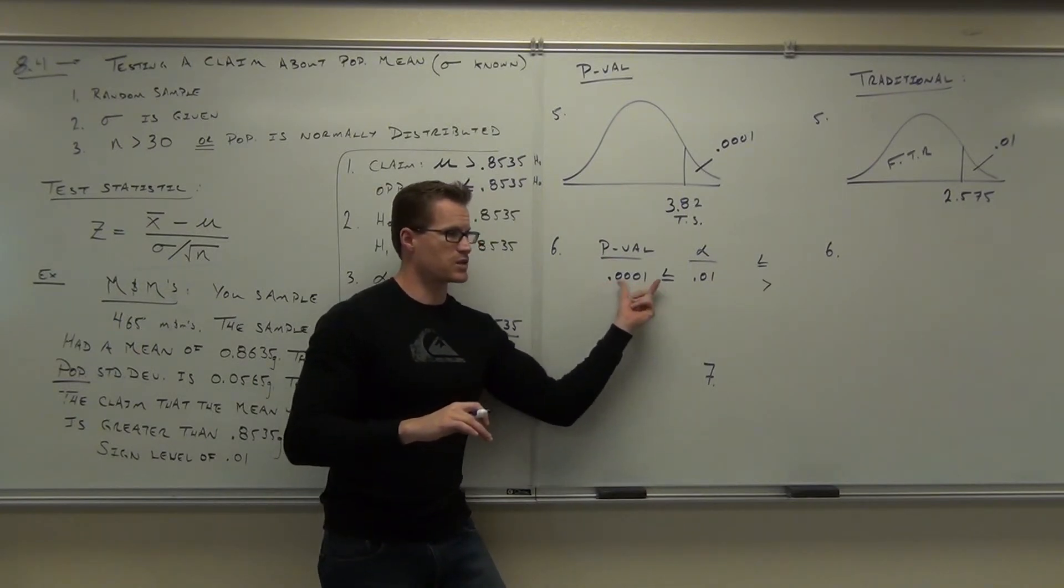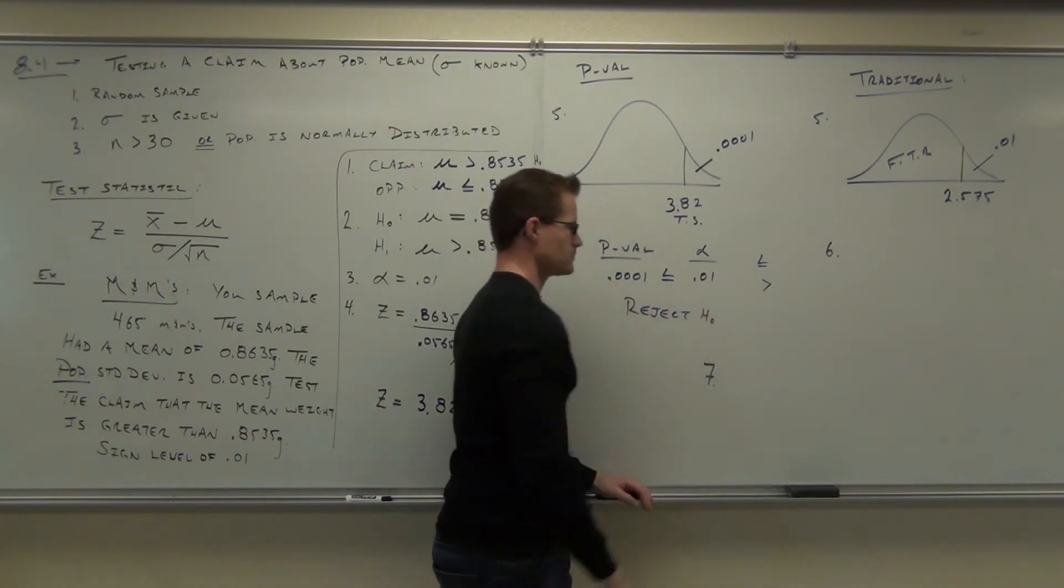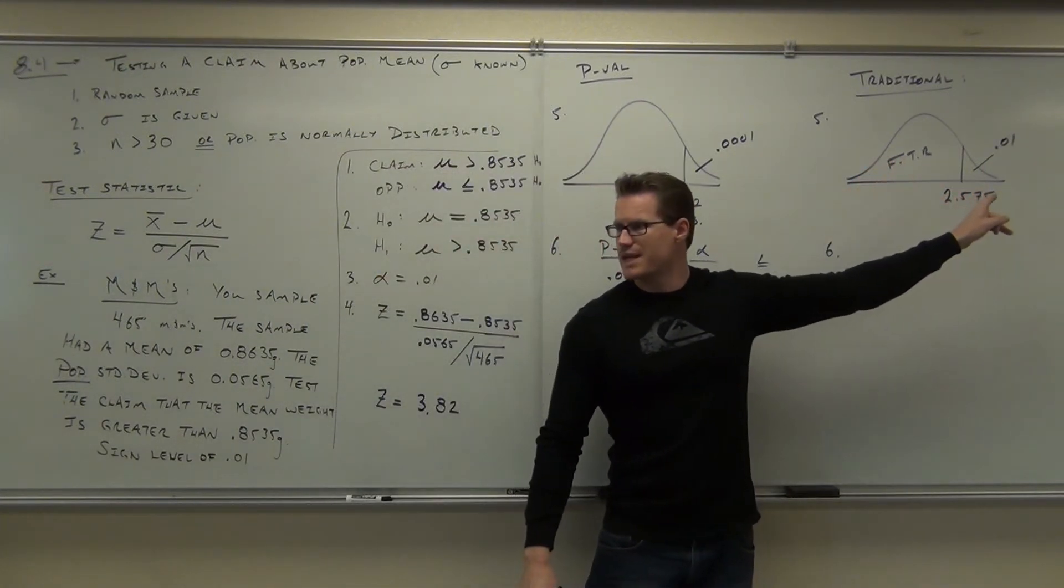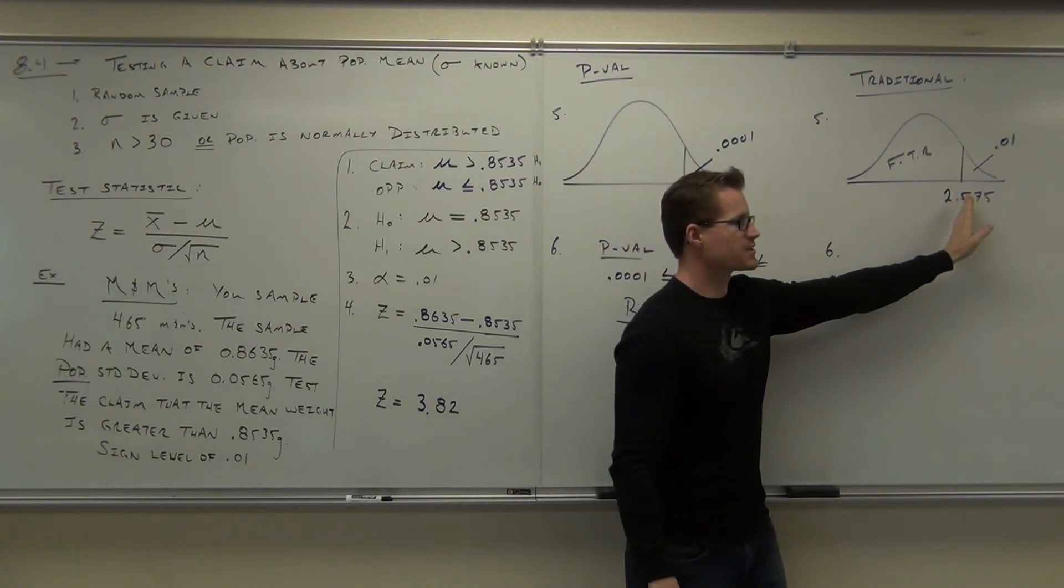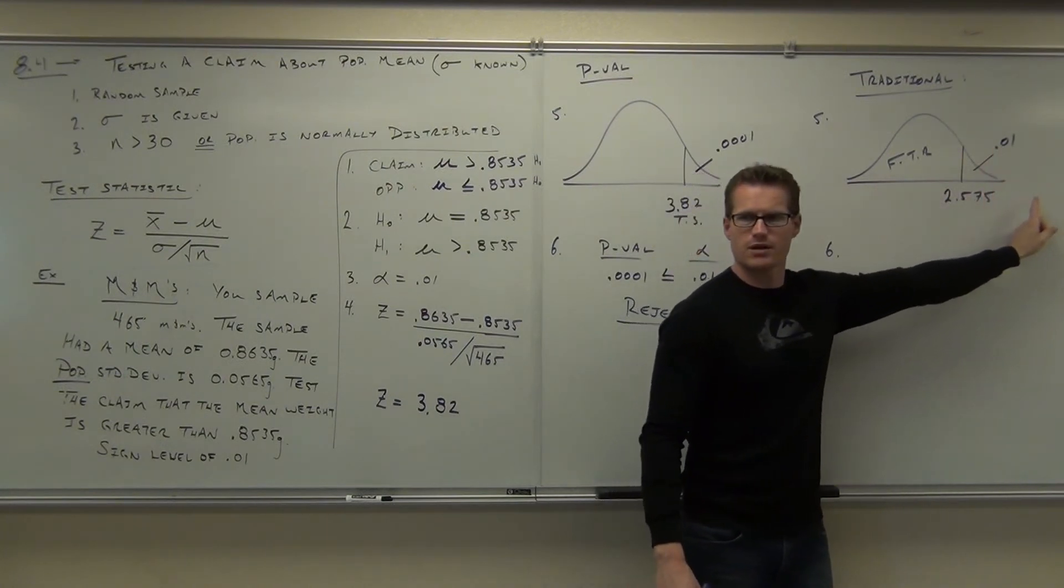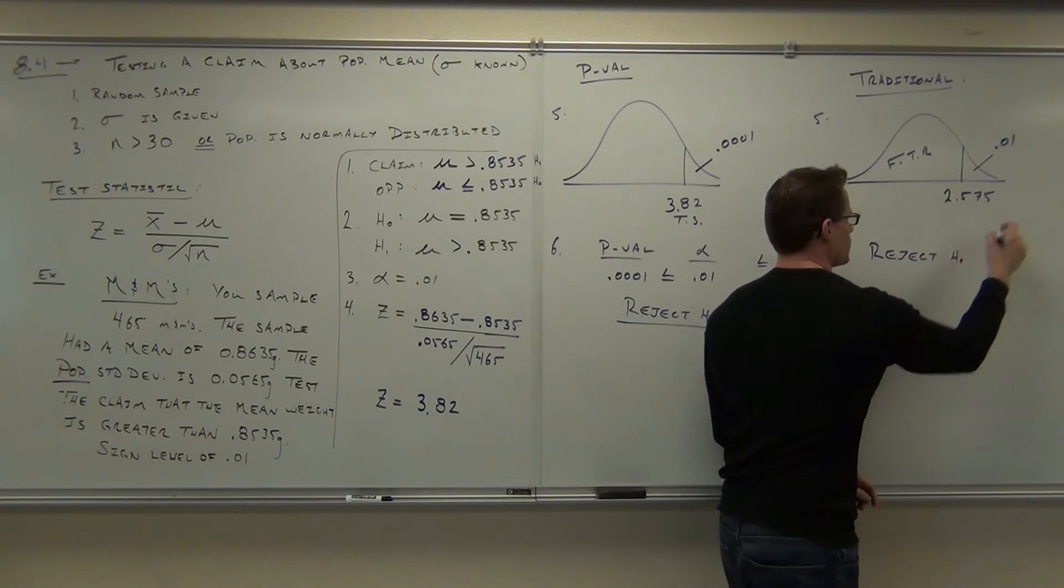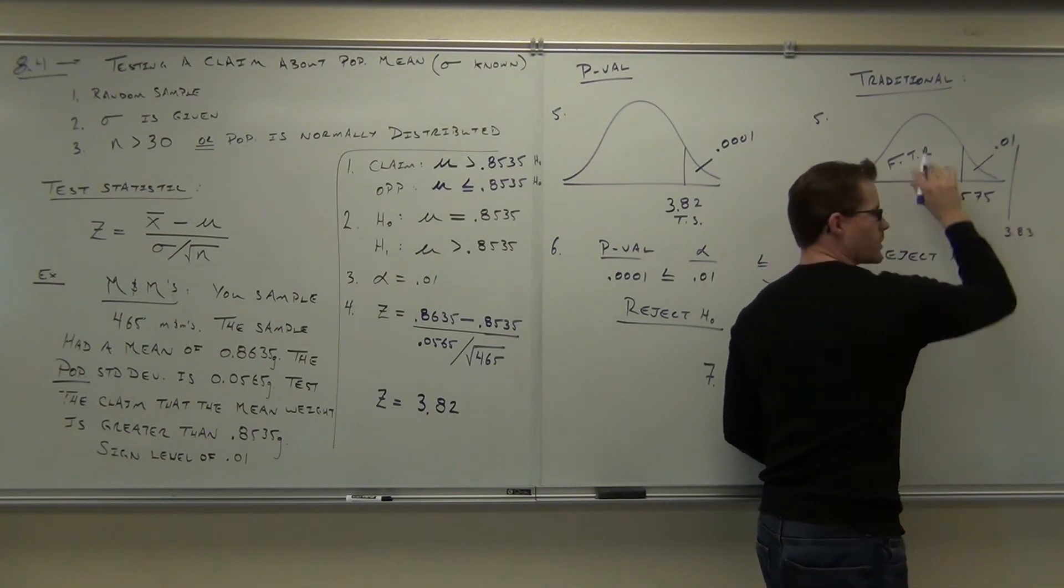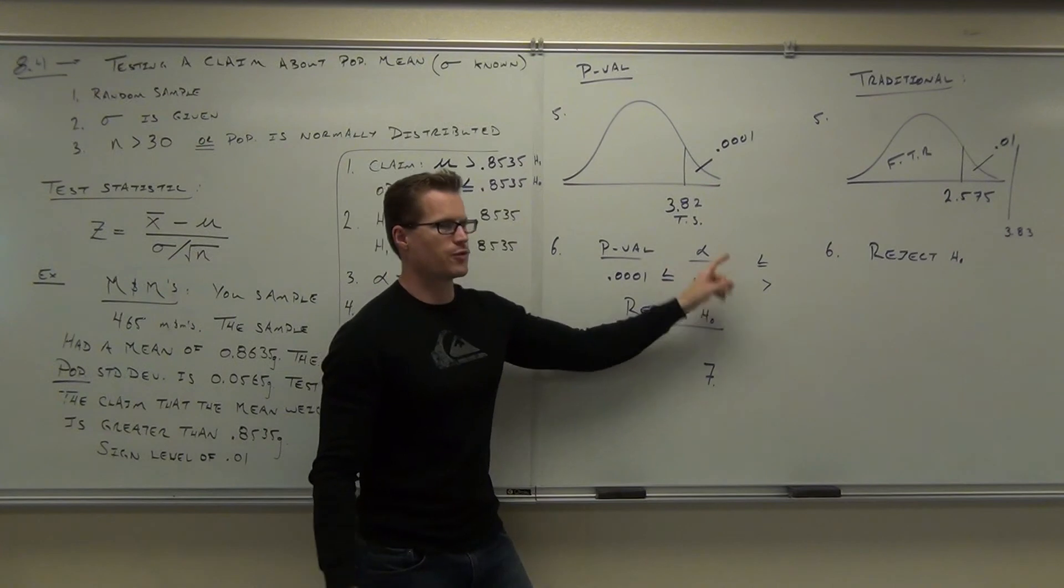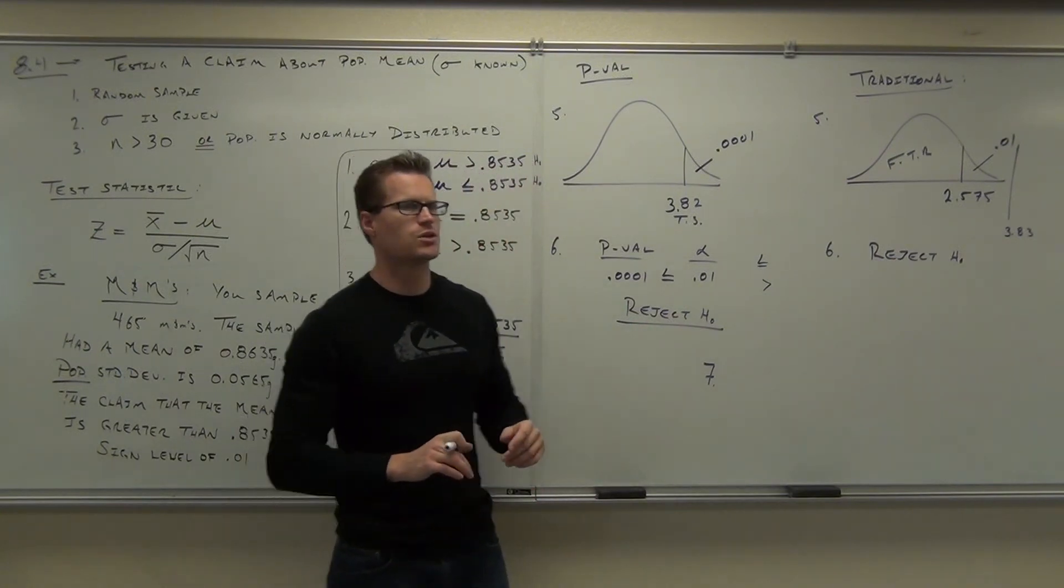Look at this area is smaller than that. It's rare enough. It's saying you reject H of 0. Now go back over here. Look at this one. You're going to use your test statistic for traditional method. Identify where your test statistic falls. Is it a failed to reject or the reject? Reject. 3.83 is way over here, isn't it? That's the rejection region. You're going to reject H of 0. So p-value, you compare your p-value to your alpha. You're comparing areas. Traditionally, you're comparing z-scores. It's the same idea, just comparing a few different things.